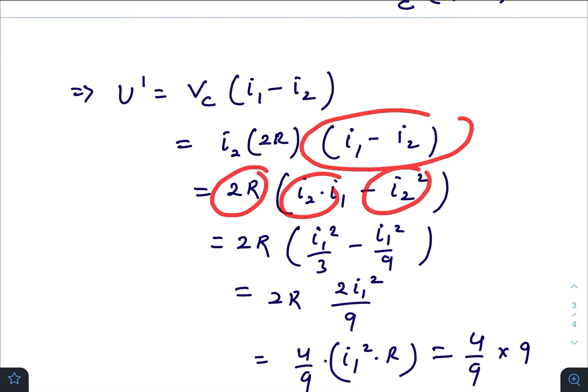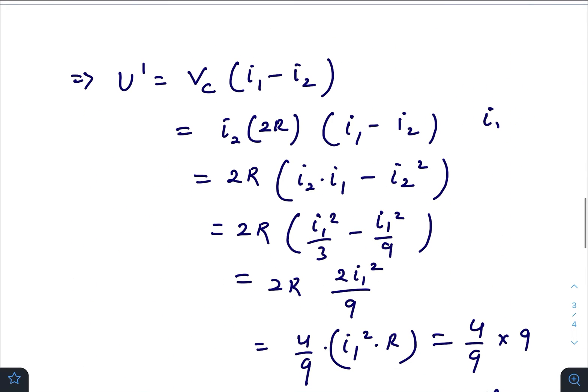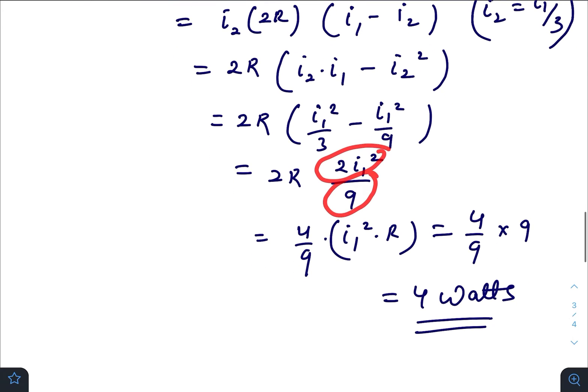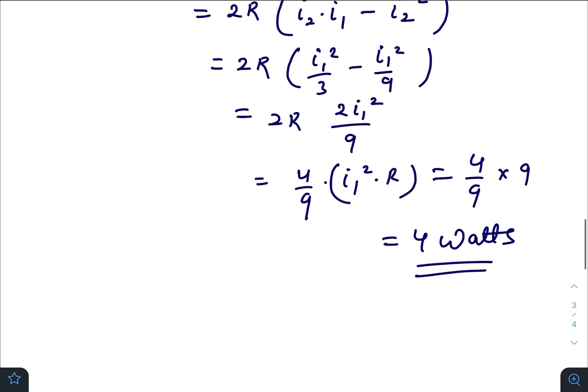We already know I₂ = I₁/3. Substituting, we get 2R(I₁²/3 - I₁²/9) = 2R(2I₁²/9) = (4/9)RI₁². Since RI₁² is the power dissipated across R, which is 9 watts, we get (4/9) × 9 = 4 watts.